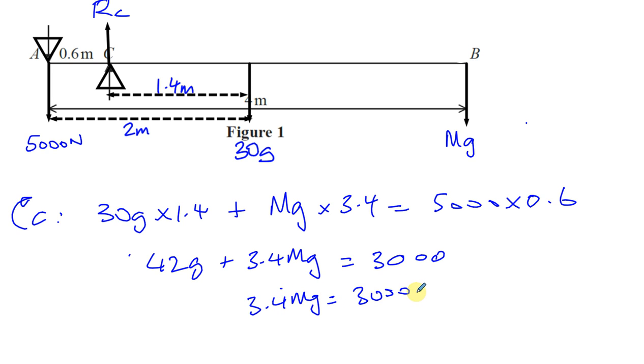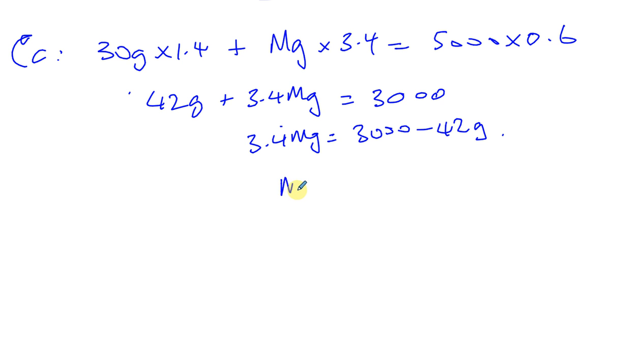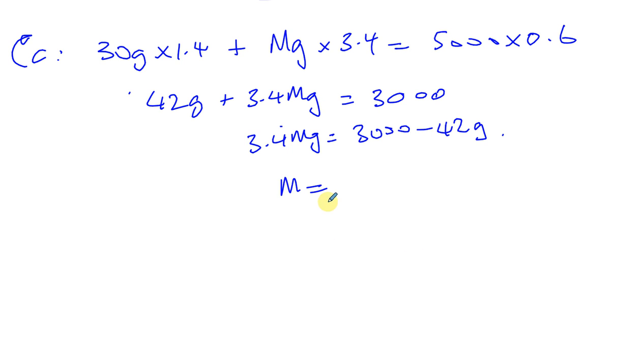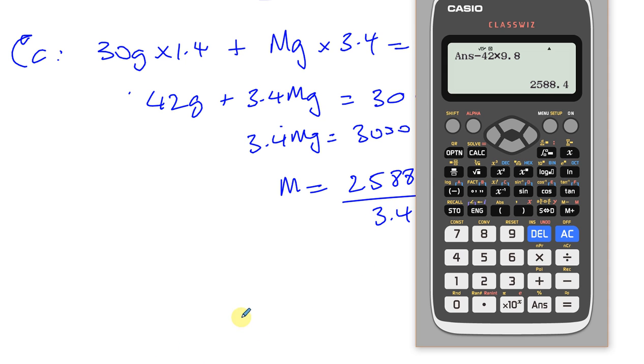So now we want to find what M is. So we can do 3.4 Mg is equal to 3,000 minus 42g. And M is going to be that divided by 3.4. Minus 42g times 9.8. That gives you 2,588.4, and we're going to divide that by 3.4g. So divide that by 3.4g. You can put that in brackets there. So your answer is going to be, you get 77.6.